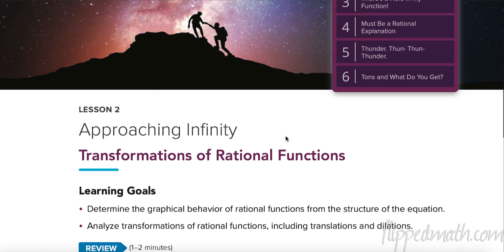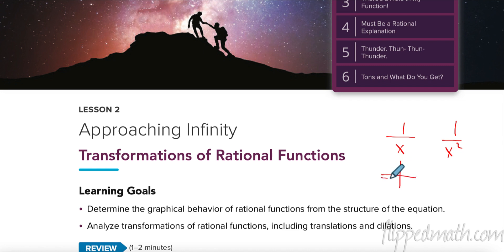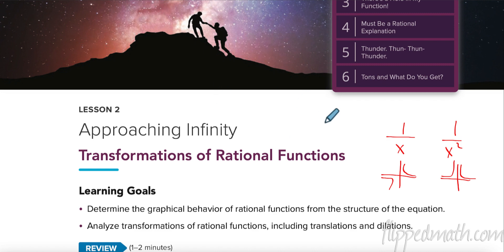Our learning goals today — what we're going to talk about — is the graphical behavior of rational functions. Rational functions are polynomial divided by a polynomial. Our basic one was a power function. Last time we had one that looked like that, and even-power ones look like this. We're going to see how to translate these, move them around a little bit, and have different asymptotes.